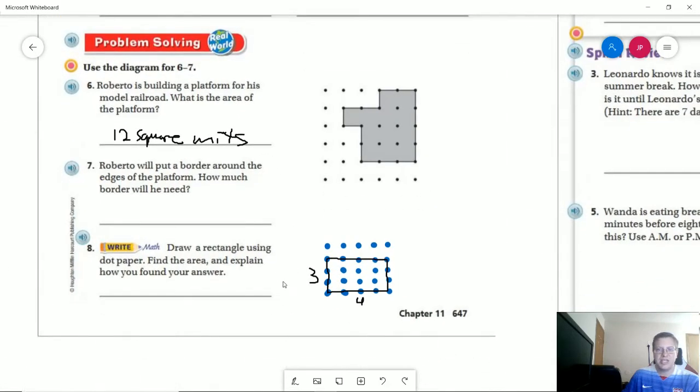I decided to make a rectangle that was three by four, which means I have three rows of four. And so I could do multiplication to find my answer.